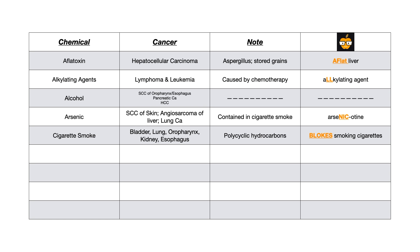Cigarette smoke causes bladder, lung, oropharynx, kidney, and esophageal cancer. What's high yield for test day is that the carcinogenic part of smoke is actually the polycyclic hydrocarbons — that has come up in questions before. The mnemonic is 'the blokes smoking cigarettes': BLOKES stands for Bladder, Lung, Oropharynx, Kidney, and Esophagus. So your blokes smoking cigarettes get all these different types of cancer.